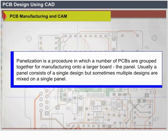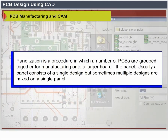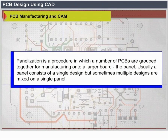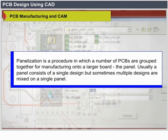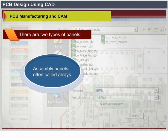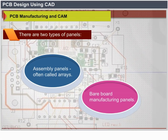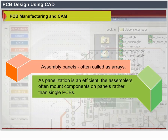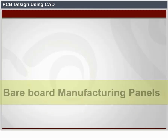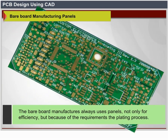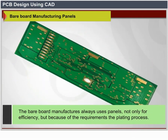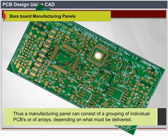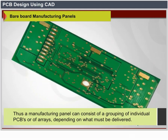Panelization is the procedure whereby a number of PCBs are grouped for manufacturing onto a large board called a panel. Usually a panel consists of a single design, but sometimes multiple designs are mixed on a single panel. There are two types of panels: assembly panels (often called arrays) and bare board manufacturing panels. The bare board manufacturers always use panels, not only for efficiency but because of the requirements of the plating process. A manufacturing panel can consist of a grouping of individual PCBs or arrays depending on what must be delivered.